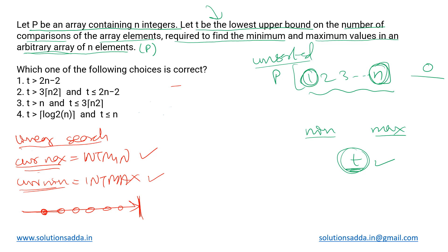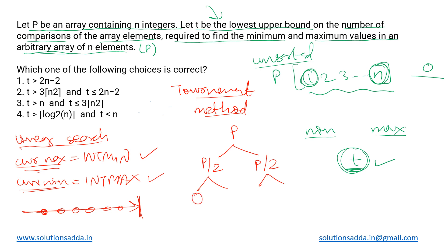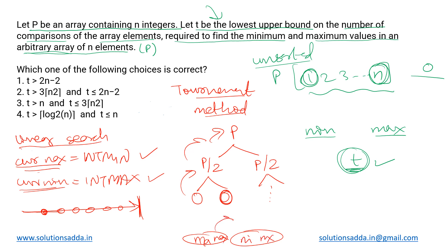There is a better approach called the tournament method — a divide and conquer algorithm that divides the problem into two sub-problems of equal size. We divide array P into two halves and continue until we have single elements or pairs. From each pair we find the current max and min: the smaller is min, the larger is max. We return those values and combine them, so at the top level we get the min and max of the entire array.